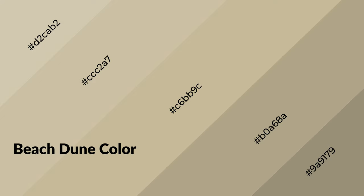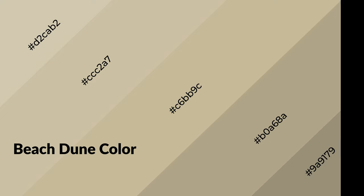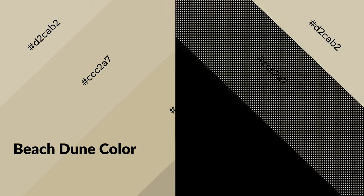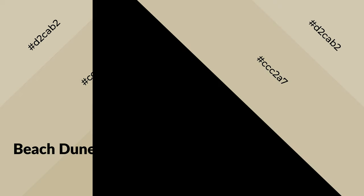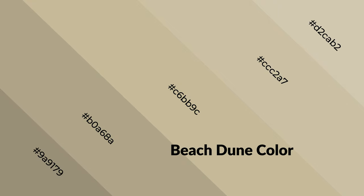Beach dune is a warm color and it emits cozier and active emotions. Warm colors are symbols of warmth, fire, heat, and sunshine. It also evokes joy, passion, love, and even anger. You can see warm colors used in restaurants and gyms.